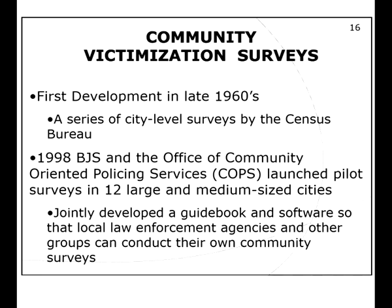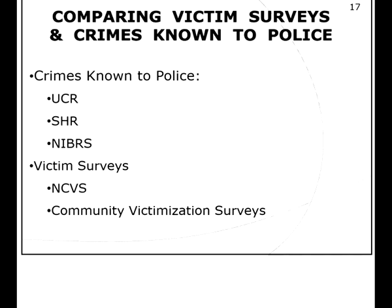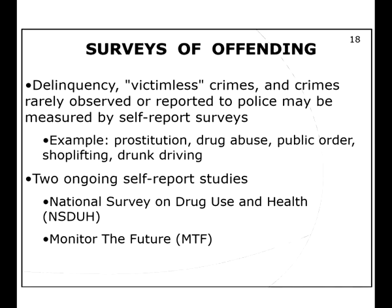Community victimization surveys started in the 1960s — these are city-level surveys, though you don't hear as much about them as the National Crime Victimization Survey since they're not used as frequently. Comparing victim surveys to crimes known to police, you can look at the UCR, the SHR, NIBRS, and victim surveys to get an estimate of how much crime is occurring. They all have their limitations, which makes it very difficult to pin down the dark figure of crime, especially for minor offenses.